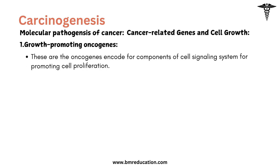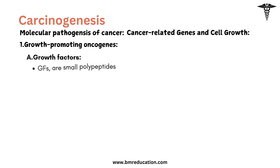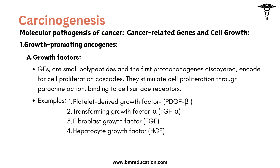These oncogenes encode for components of the cell signaling system promoting cell proliferation: growth factors, receptors of growth factors, cytoplasmic signal transduction proteins, nuclear transcription proteins, and cell cycle regulatory proteins. Growth factors are small polypeptides and the first proto-oncogenes discovered, encoding for cell proliferation cascades. They stimulate cell proliferation through paracrine action by binding to cell surface receptors.